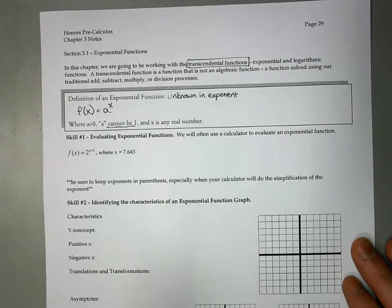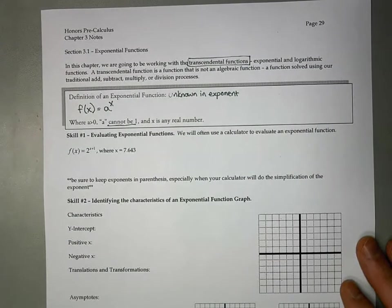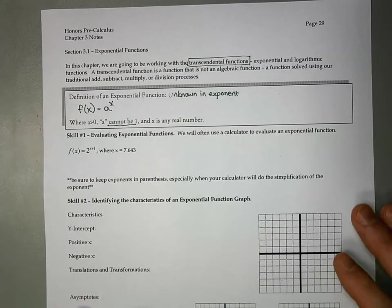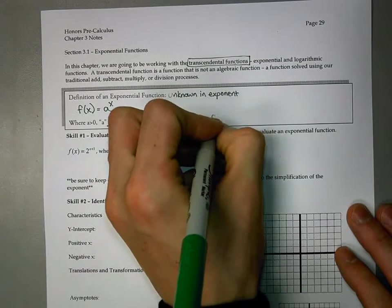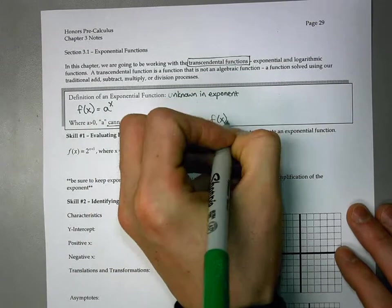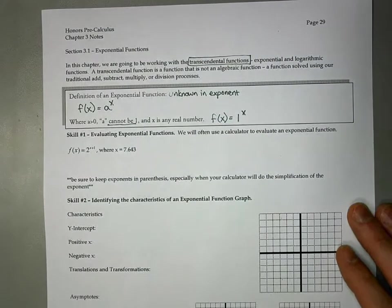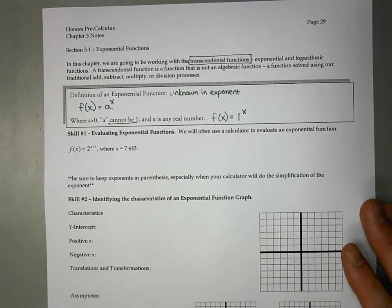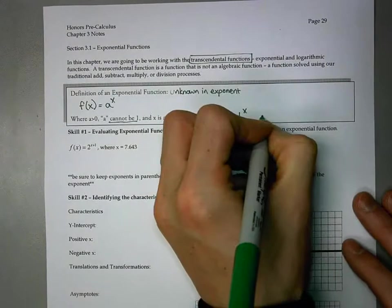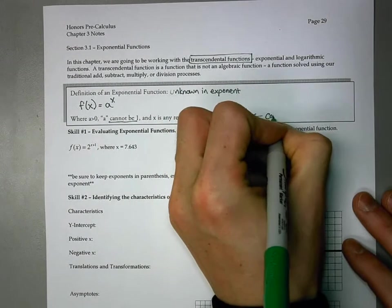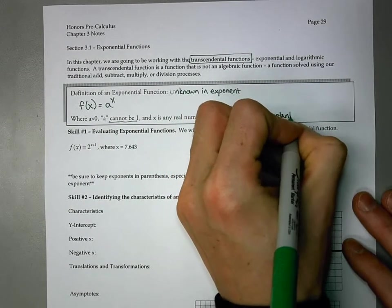It's going to look like the format f(x) equals a raised to the x, where a cannot be 1 and x is any real number. The reason that a cannot be 1 is that if I have f(x) equals 1 to the x, I plug in any value for x, 1 raised to anything is just 1. This we know as being a constant function, which is not exponential.